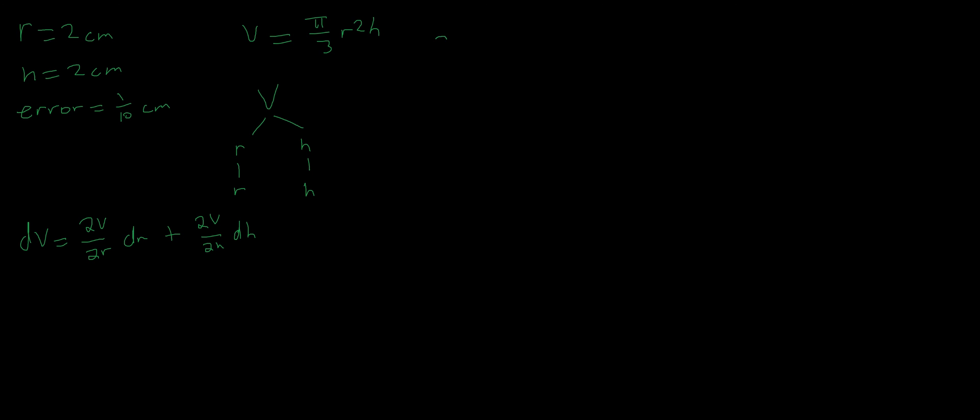We now can take our partial derivatives. Partial V with respect to r, we get 2 pi r h over 3. Partial V with respect to h, we get pi r squared over 3.